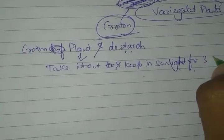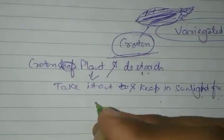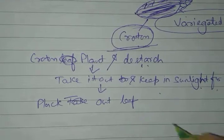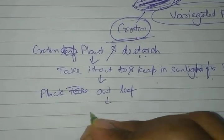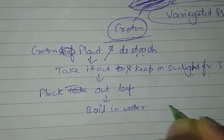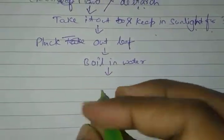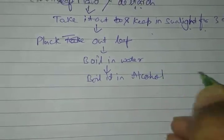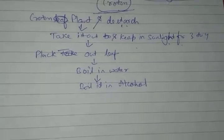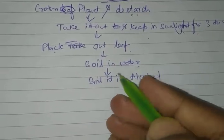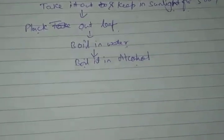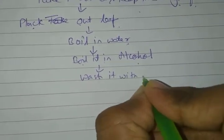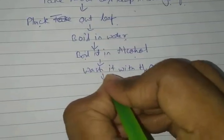Keep it in sunlight for about three to four days. After this, pluck out a single leaf. Then boil it in water to improve its permeability. Then boil it in alcohol using a water bath to remove the chlorophyll pigments — the same procedure we discussed in the previous experiment. Then wash it with water. After that, put iodine on it.